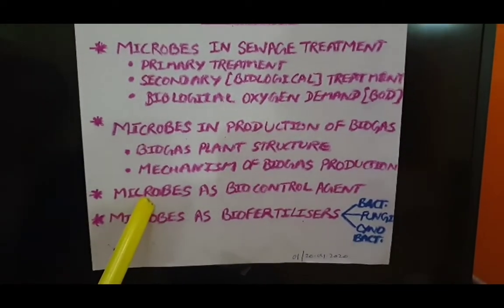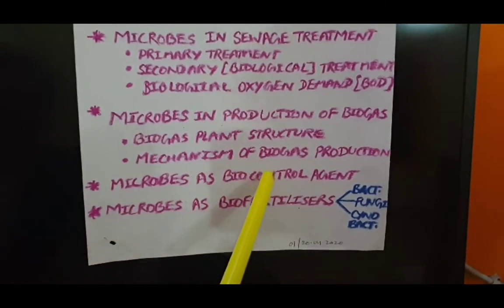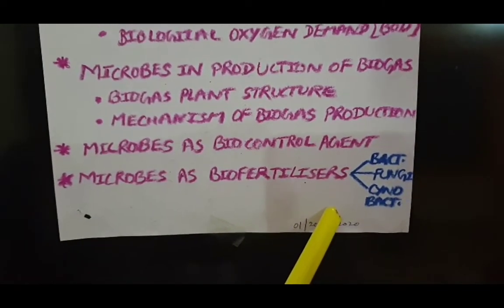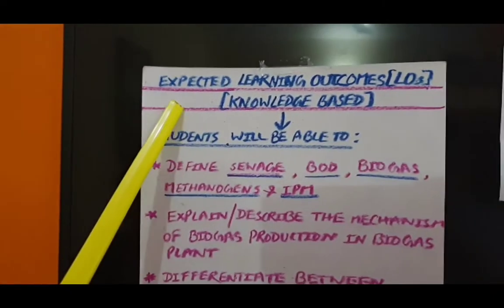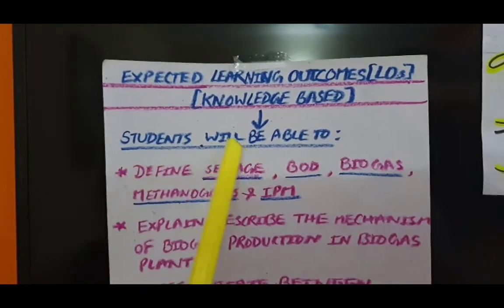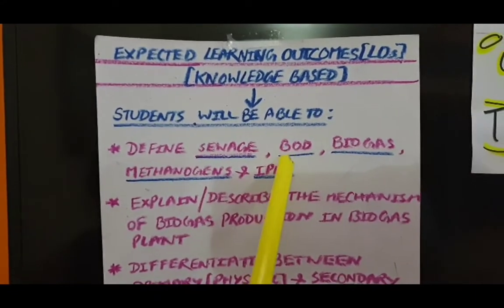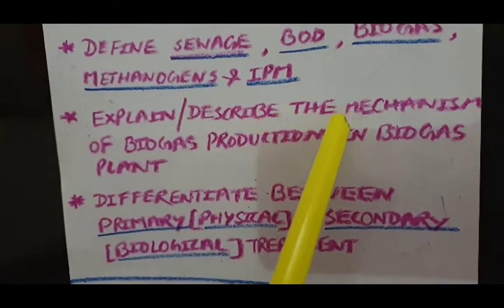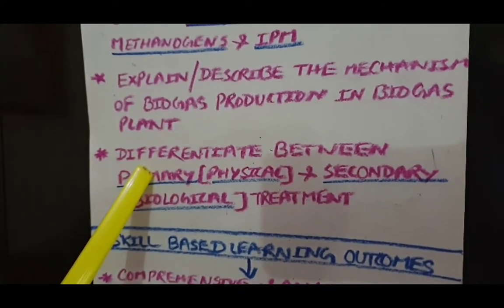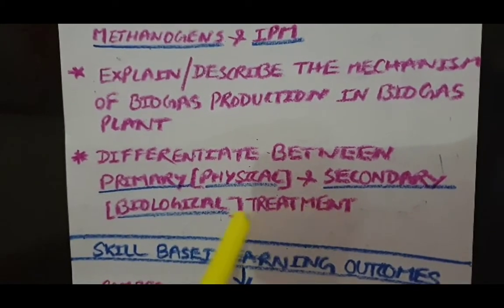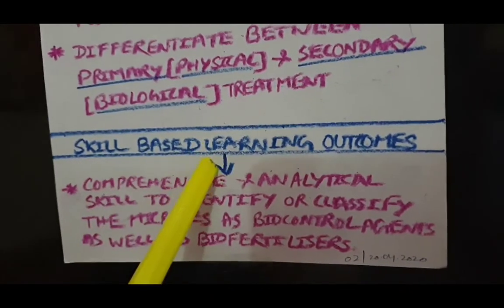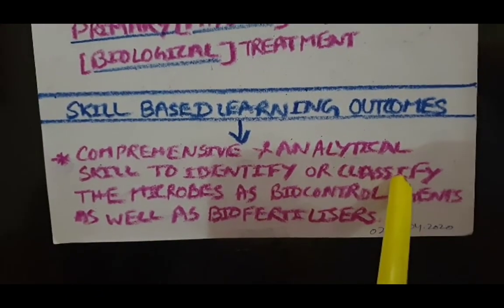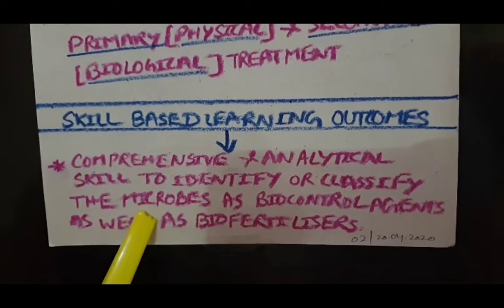We will also study microbes as biocontrol agents to fight against pests in agricultural processes, and microbes as biofertilizers like bacteria, fungi, and cyanobacteria. After today's class, the expected learning outcomes are: you will be able to define sewage, BOD, biogas, methanogens, and IPM. You will be able to explain the mechanism of biogas production in a biogas plant, differentiate between primary and secondary treatment of sewage, and use your analytical skills to classify microbes as biocontrol agents and biofertilizers.